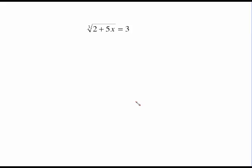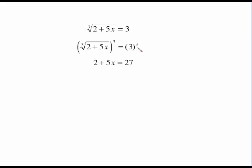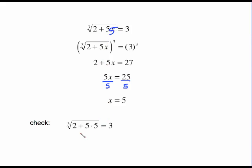We can also do radical equations with cube root, fourth root, or fifth root — it doesn't matter. For the cube root of two plus five x equals three, to undo the cube root we do the opposite and cube both sides. The cube root raised to the third power gives two plus five x. Three cubed is three times three times three, which is 27. Subtract two from both sides and divide by five to get x equals five. Checking: five times five is 25, plus two is 27, and the cube root of 27 is three. So x equals five is the solution.